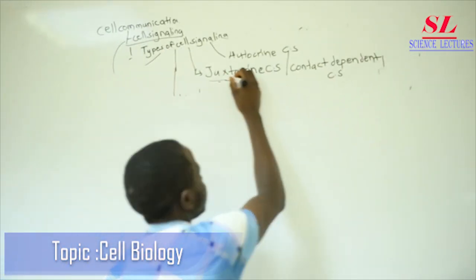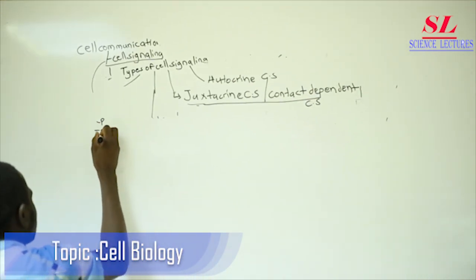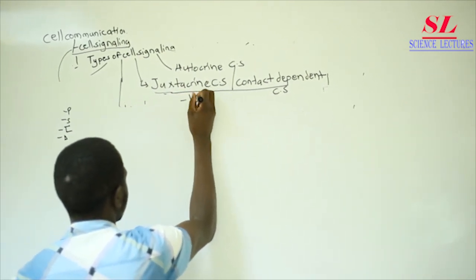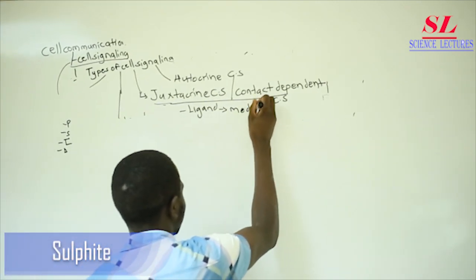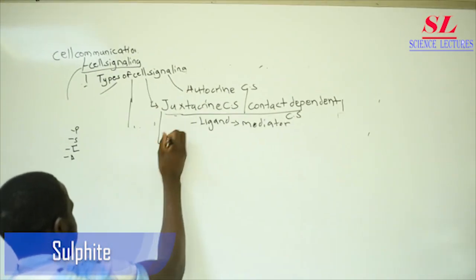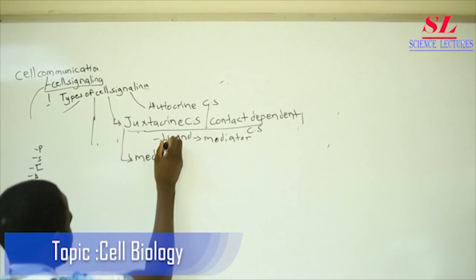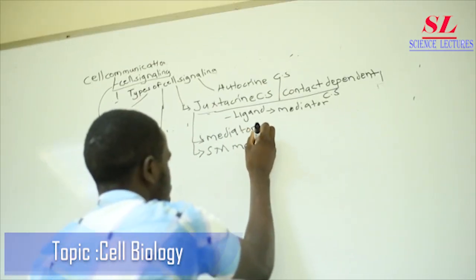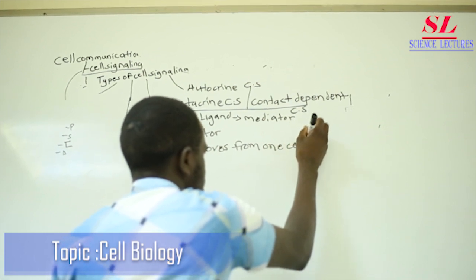So all that we've discussed — paracrine, synaptic, endocrine, and autocrine cell signalling — involves the production of a ligand, which always needs a mediator to be transported to its receptor site. But in juxtacrine, or contact-dependent signalling, we don't need any mediator. The signaling molecule moves directly from one cell to another.